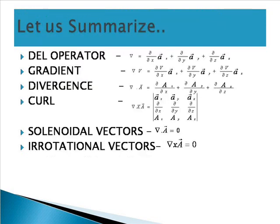Now let us summarize. So far we have seen: the del operator (vector differential operator), gradient, divergence and its three types — positive divergence, negative divergence and zero divergence — then curl, what is a solenoidal vector, and what is an irrotational vector. We come to the end of the session. If you understood the concepts, kindly subscribe to my channel and share with your friends. In the next video, we will see problems related to vector analysis. Let us understand and grow.